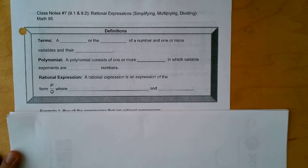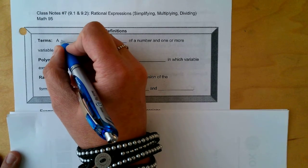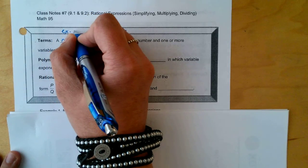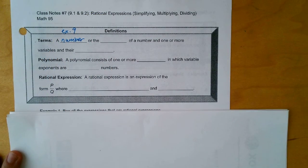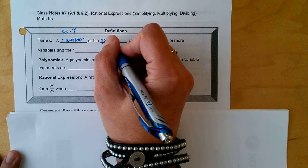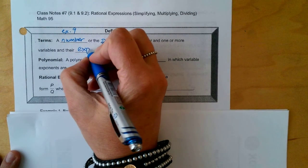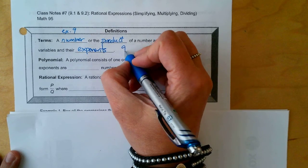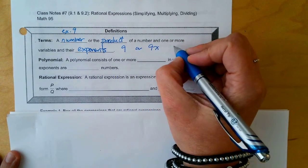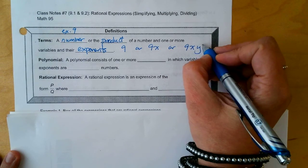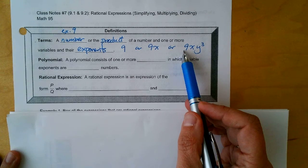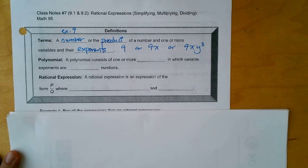Let's start with a term. What is a term? It can be a number, such as 9 could be a term all by itself, or the product — the answer to a multiplication. So it could be a number or the product of a number and one or more variables and their exponents. A term could be 9, or 9x, or 9xy cubed. The number and variables are being multiplied, so that makes it a term.